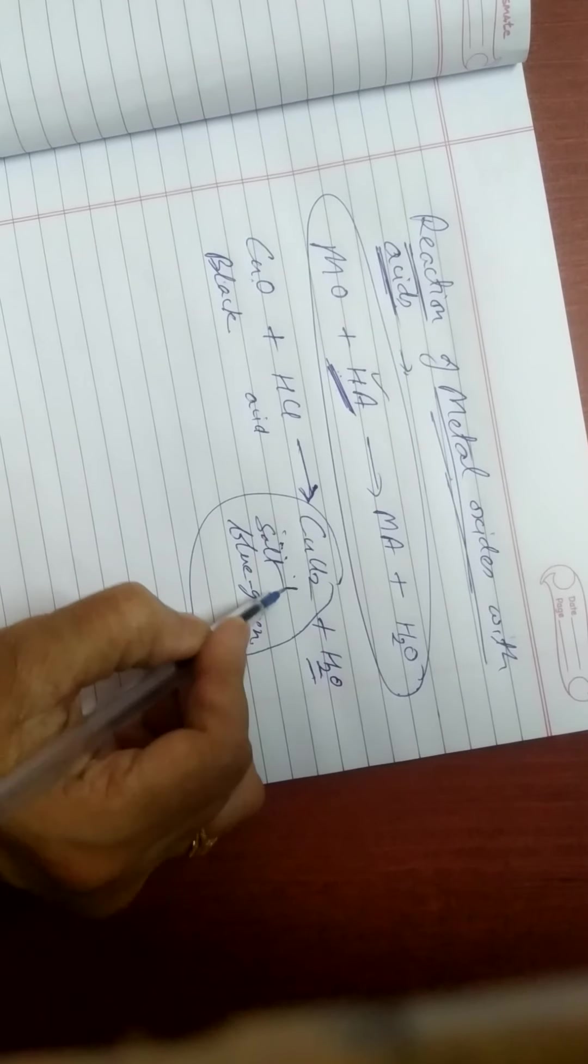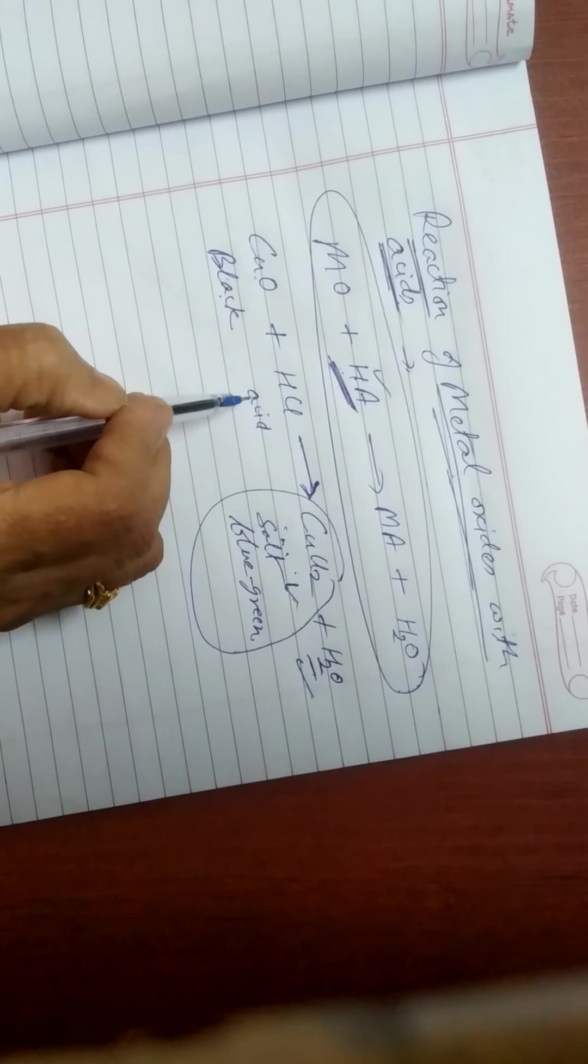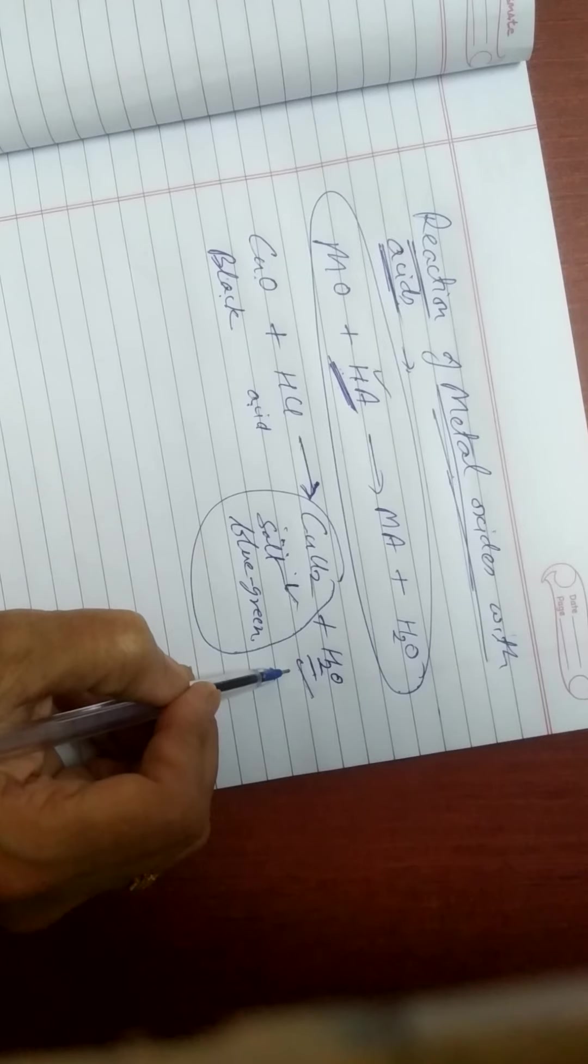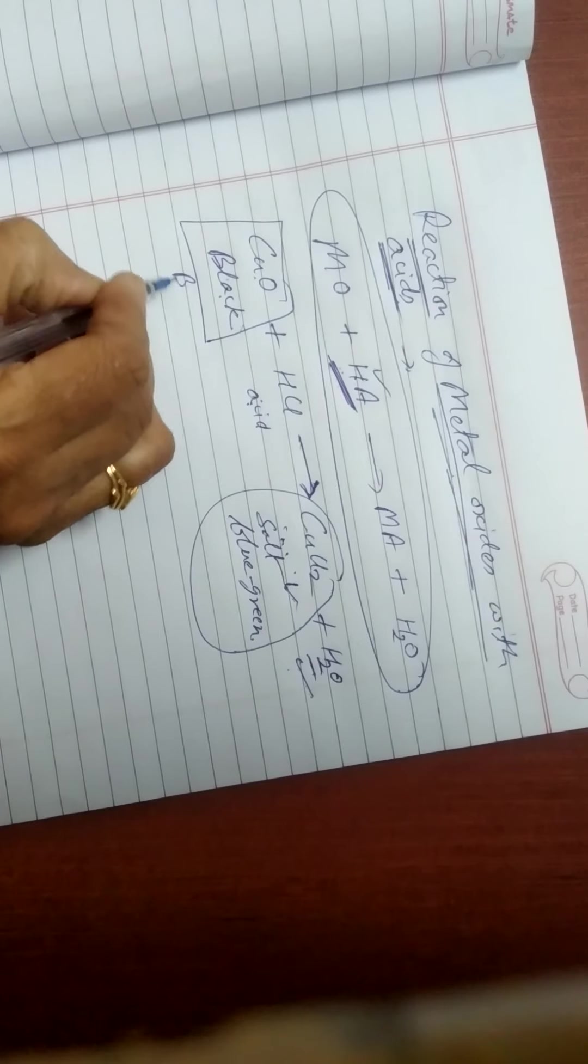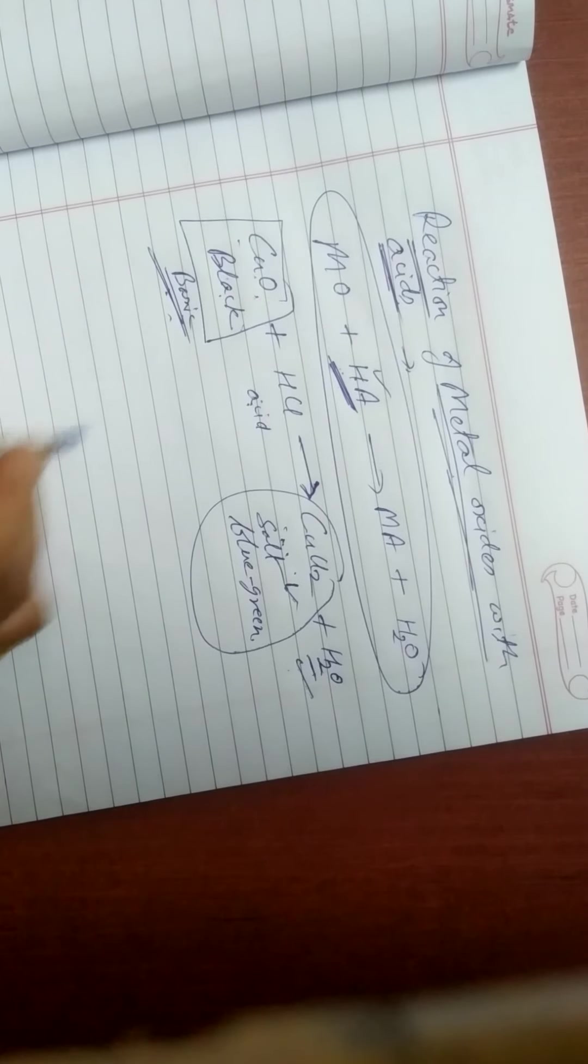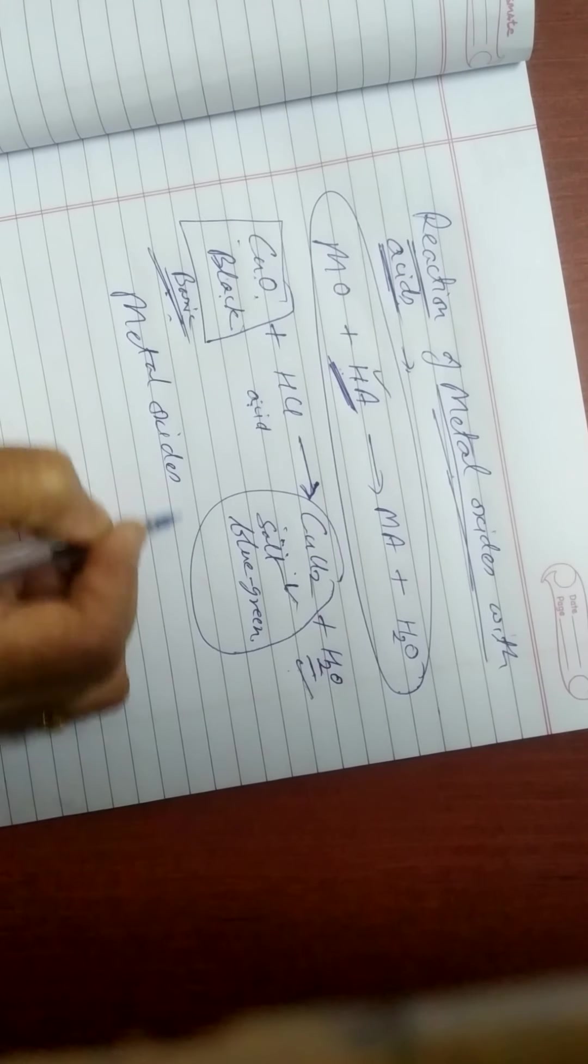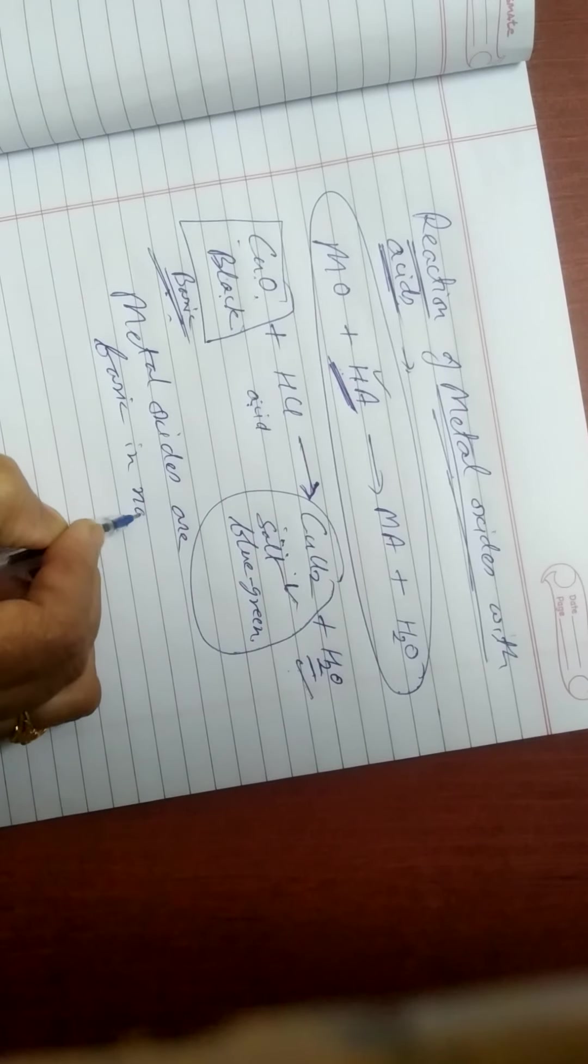This is salt plus water. If any compound or substance reacts with acid and forms salt plus water, it shows that the compound which reacted with acid is basic in nature. So all the metal oxides are basic in nature.